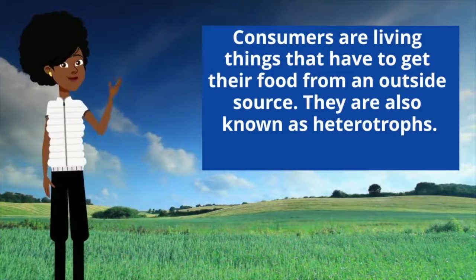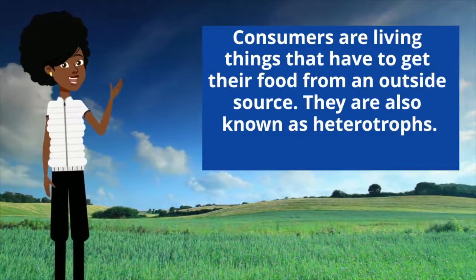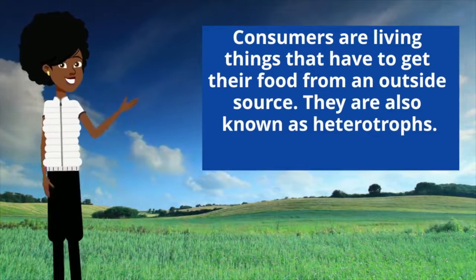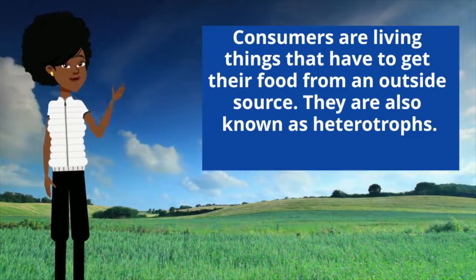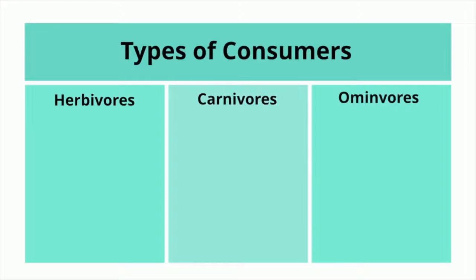Consumers are living things that have to get their food from an outside source. They're also known as heterotrophs. Now there are three types of consumers: herbivores, carnivores, and omnivores.